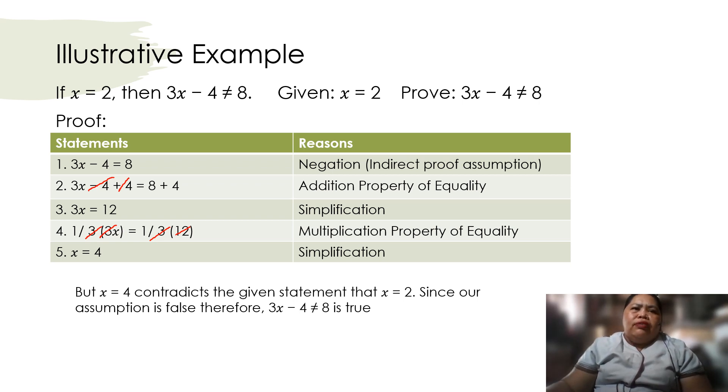But x equals 4 contradicts the given statement that x equals 2. So since our assumption is false, therefore 3x minus 4 is not equal to 8 is true.